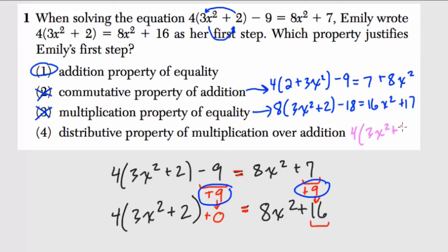4 times 3x squared plus 2. In this, we're distributing the 4, or multiplying it, to both 3x squared and 2 over addition. You're distributing it over the addition sign. So that would get you 4 groups of 3x squared. That would be 12 groups of x squared. And 4 groups of 2 is 8. So if we saw this appear in the problem somewhere, that would be an example of the distributive property, but that's not what we see here.